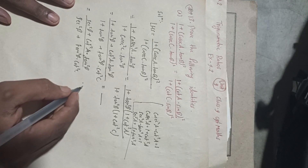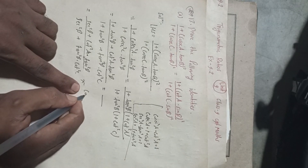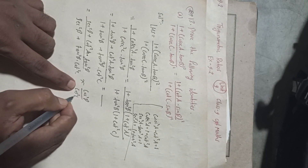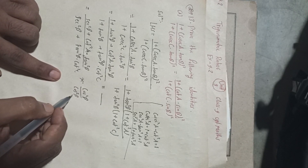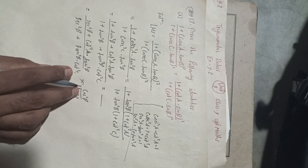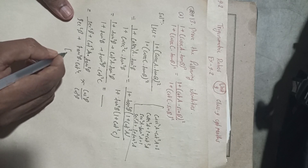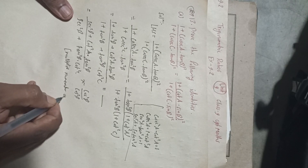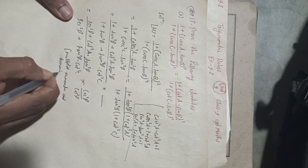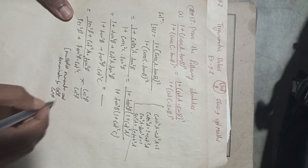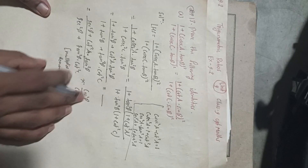Now we will multiply both numerator and denominator by cos²B / cos²B. Since cos²B / cos²B equals 1, multiplying by it does not affect the equation.